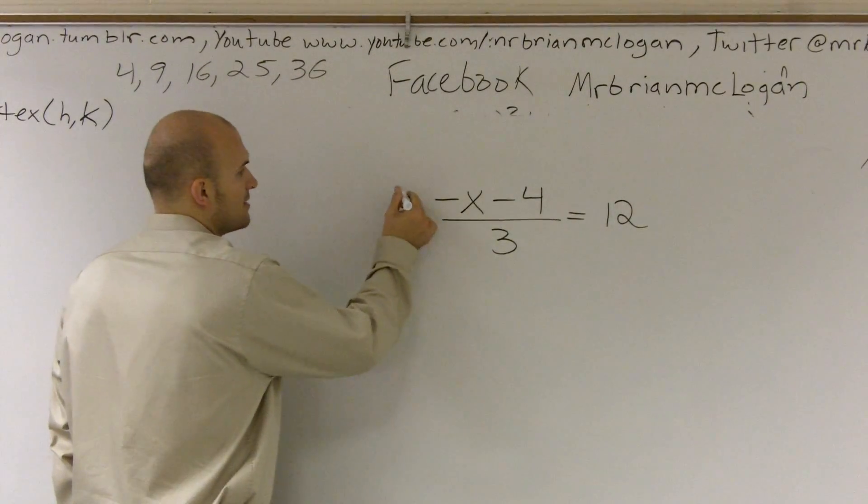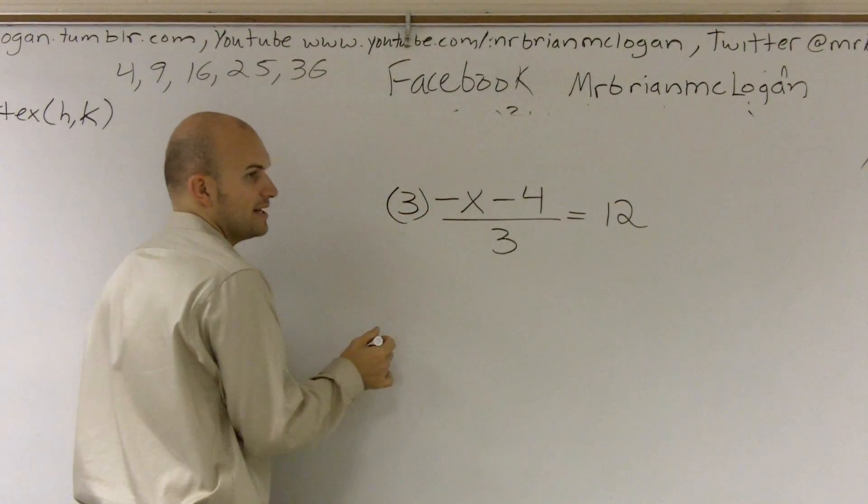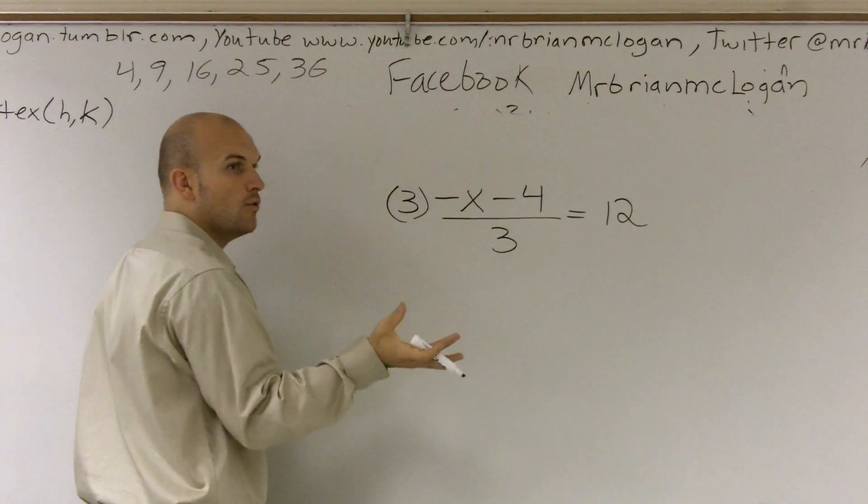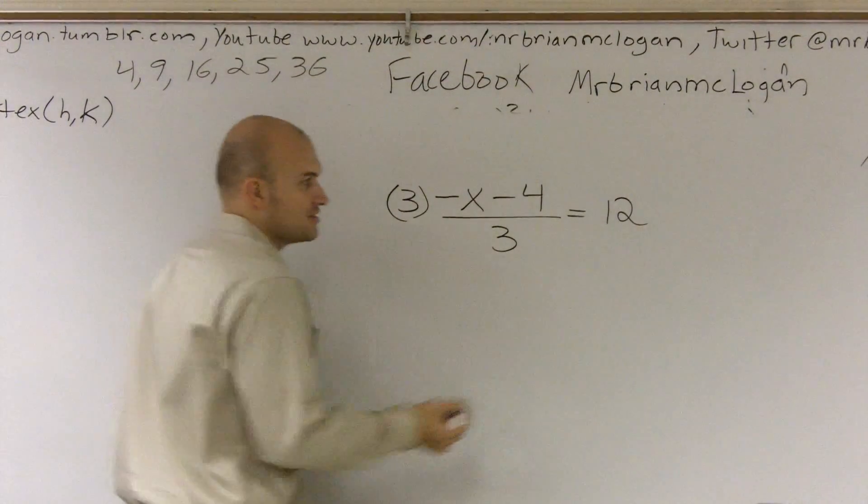So if I multiply by this denominator, I'm really setting myself up for 3 divided by 3, which is going to give me 1, which gets rid of my fraction.